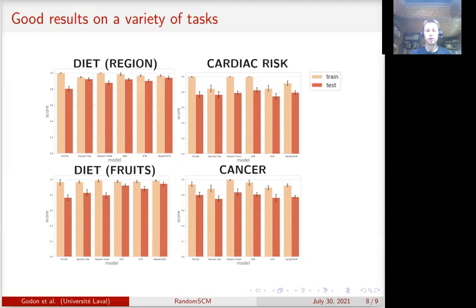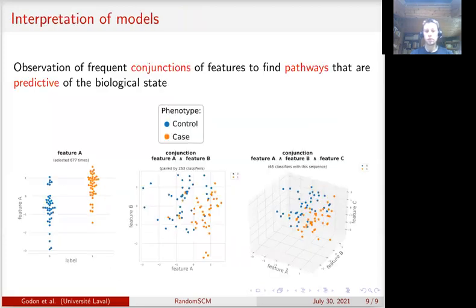Let's continue to the next step of the evaluation of the algorithm, the ability of random SCM in biomarkers discovery. We hypothesize that random SCM relies on metabolic pathways to make its predictions.